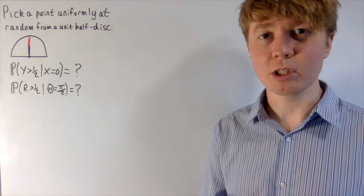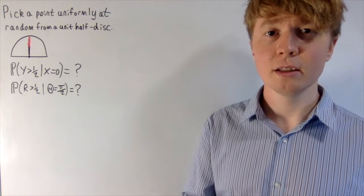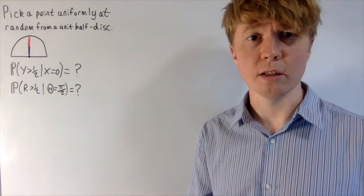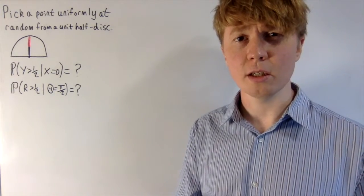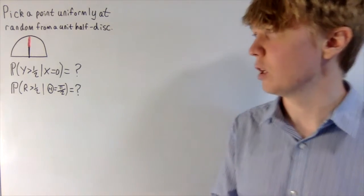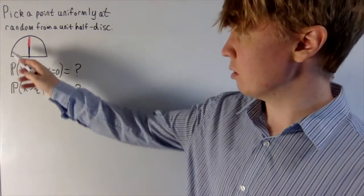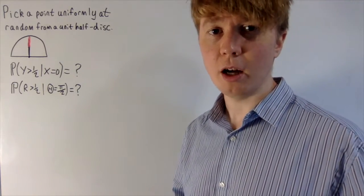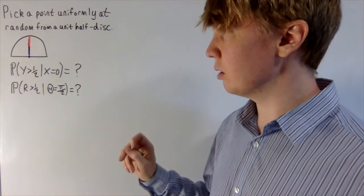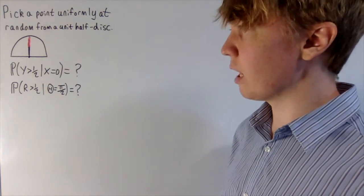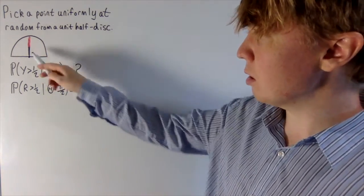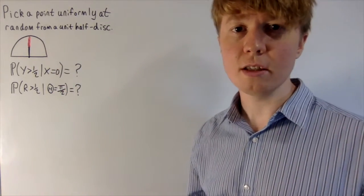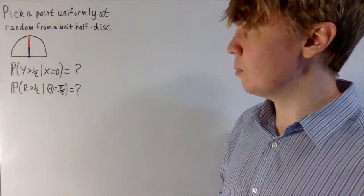We're going to look at a really interesting problem to do with conditional probability, where if we look at the same conditional event from two different perspectives using two different coordinate systems, we'll actually get slightly different probabilities. The setup is: we're picking a point uniformly at random from this unit half disk — half of a unit circle, including all the area. Then we condition on lying on the line x equals zero in Cartesian form, or theta equals pi over two in polar form.